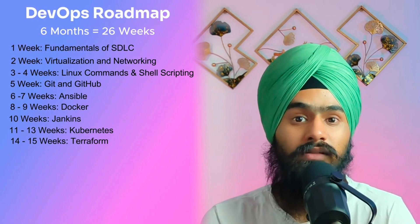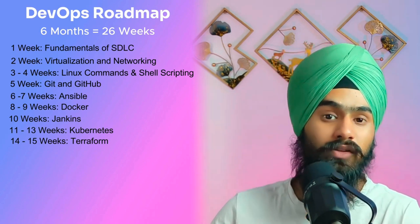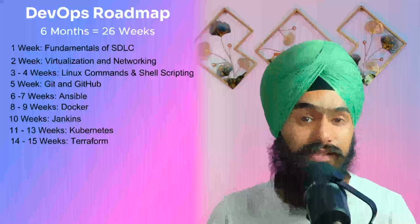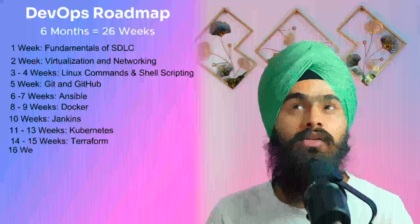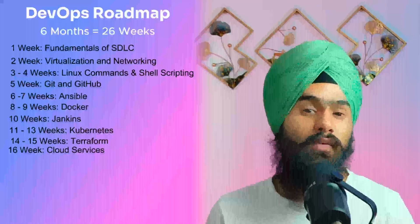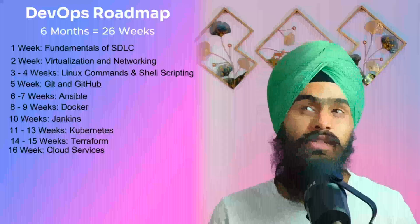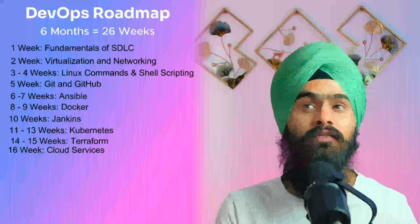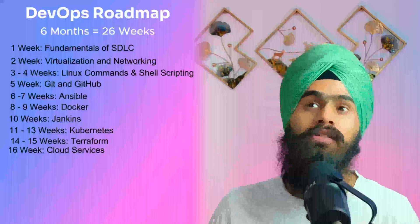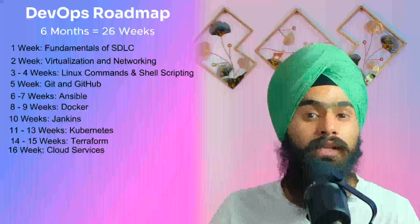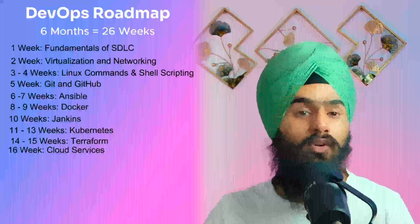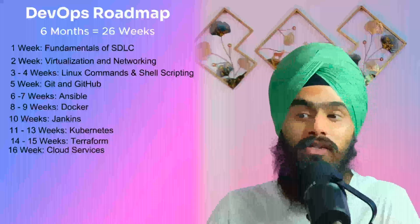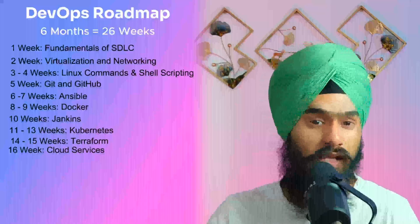Next, learn Terraform for infrastructure automation — it is an infrastructure as code tool. After that, in around the 16th week, learn cloud services. Everything is moving from on-premises to the cloud. I recommend AWS because its market value is very high and there are a lot of job openings. Knowing AWS will help you get cloud DevOps engineer jobs.